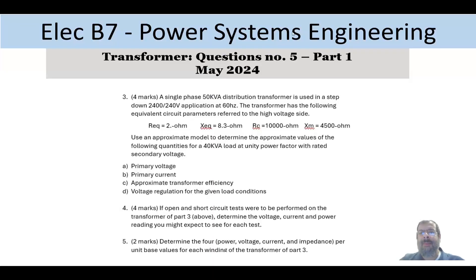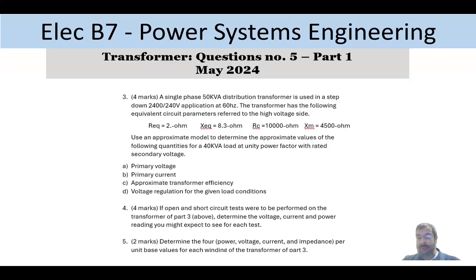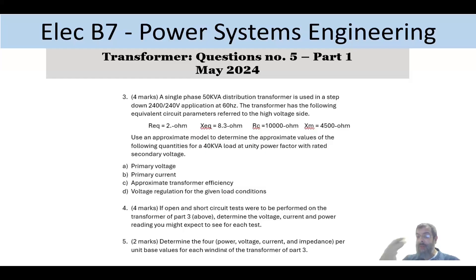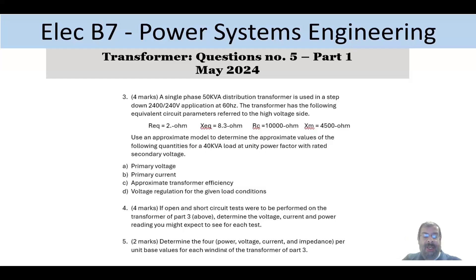Hi everyone, and welcome back to this series of Electrical B7 Power System Engineering PO exam. This is a question from May 2024, so it's a very recent exam. This question has two parts, one to five. I'm solving three to five, which are the numerical parts. One to two are more conceptual questions that I might come to later. So let's start with part number three.